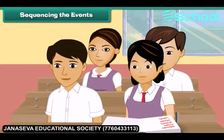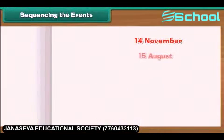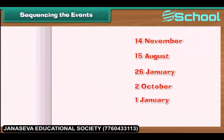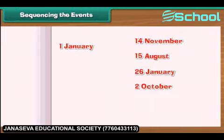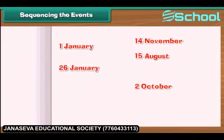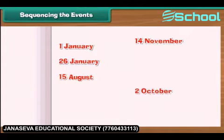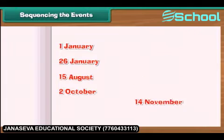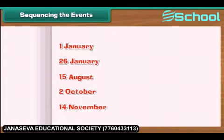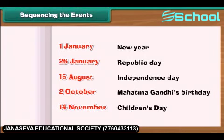Anu is at school and has listed some important dates in a jumbled manner. Let us help her arrange the days in the order they come in the year: New Year's Day, then Republic Day, then Independence Day, followed by Mahatma Gandhi's birthday, and lastly Children's Day, which is the birth date of our first Prime Minister, Pandit Jawaharlal Nehru.